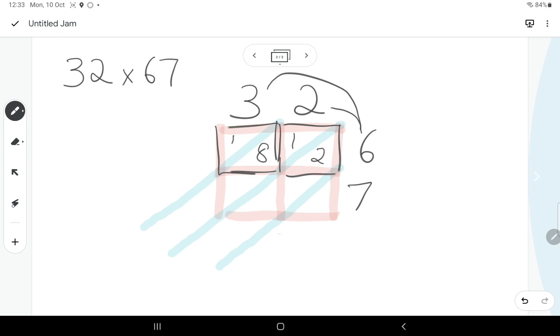Now we go down to the second layer and we're starting on the 7s. So 7 times 2 is 14 and we put that there. And then the last one is 7 times 3, which is 21.